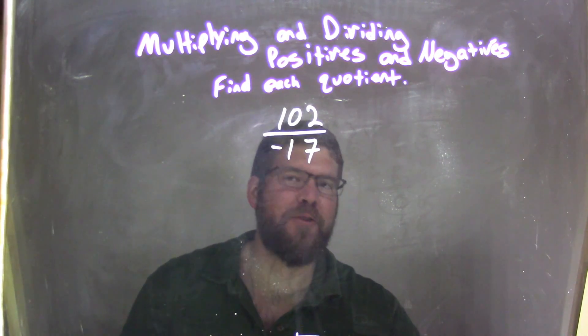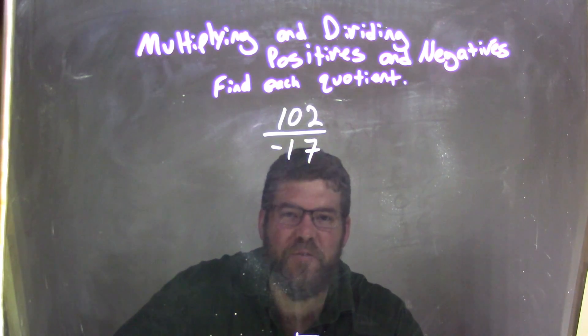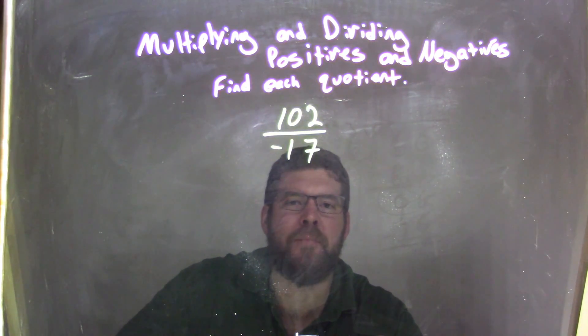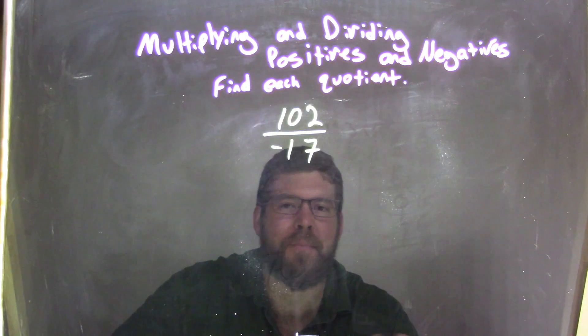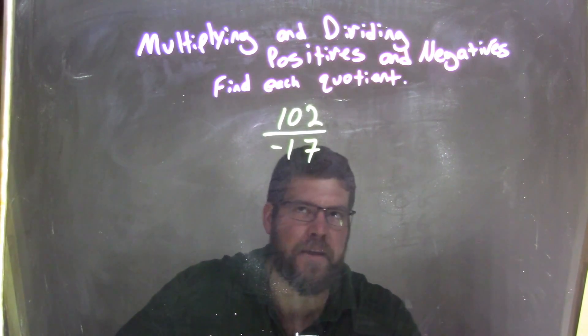So what I'm going to do is just worry about the numerator and see if I can break down the numerator a little bit to see if I get somehow something times 17. I'm looking for 17 here, so somehow breaking down 102 to have something with a 17 in it.